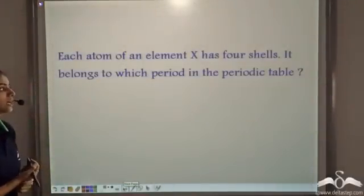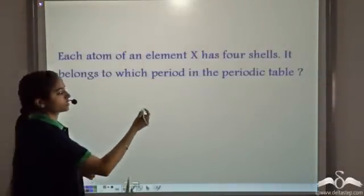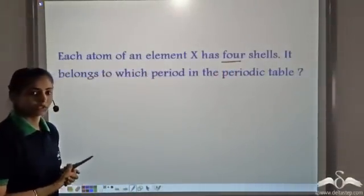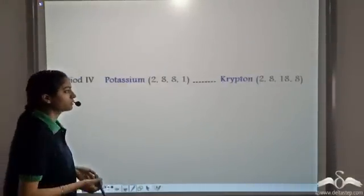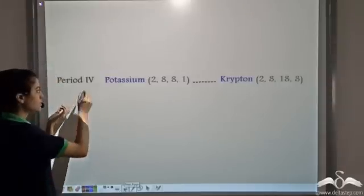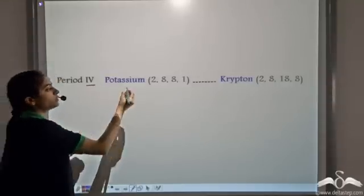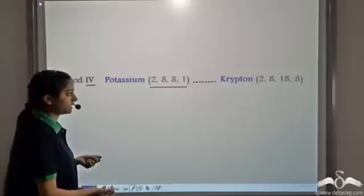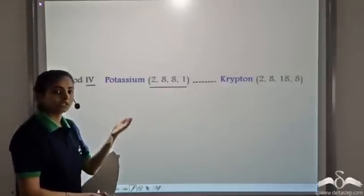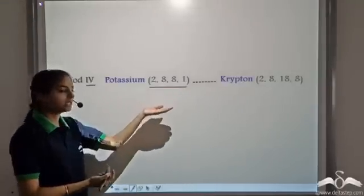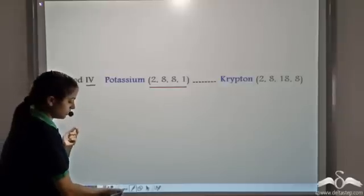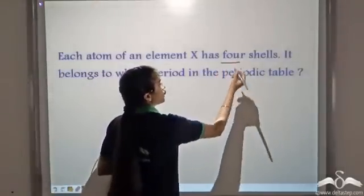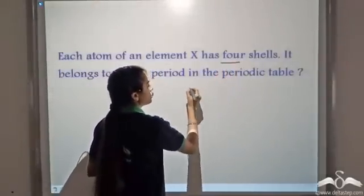Consider this: each atom of an element X has 4 shells. To which period does it belong in the periodic table? We know that the period number is equal to the number of shells for all elements. So if an atom has 4 shells, it belongs to period 4.